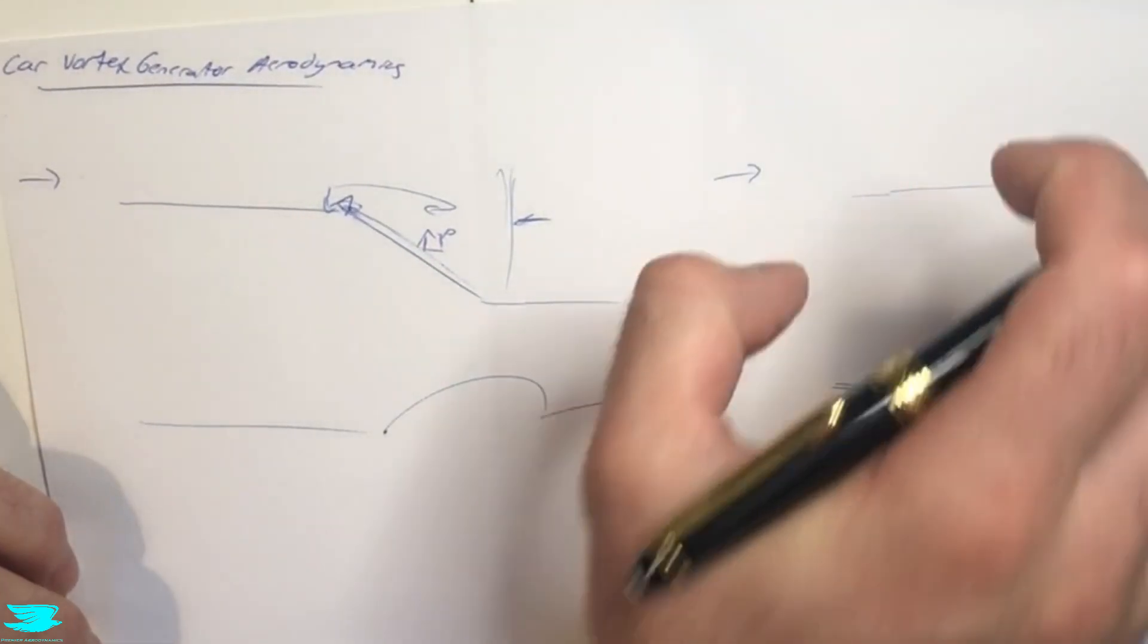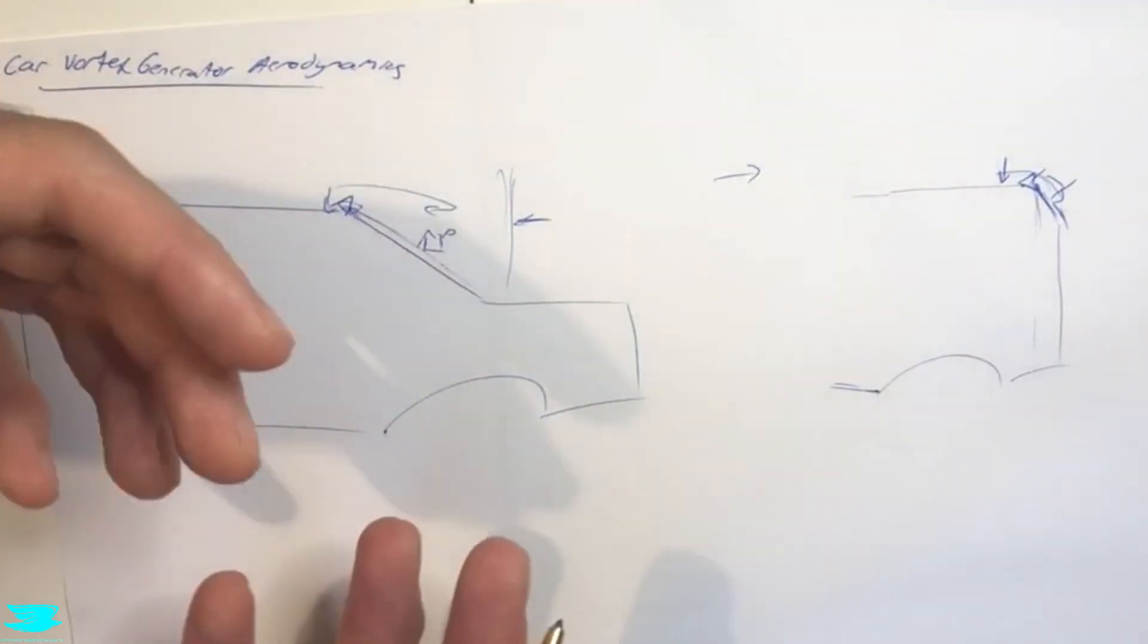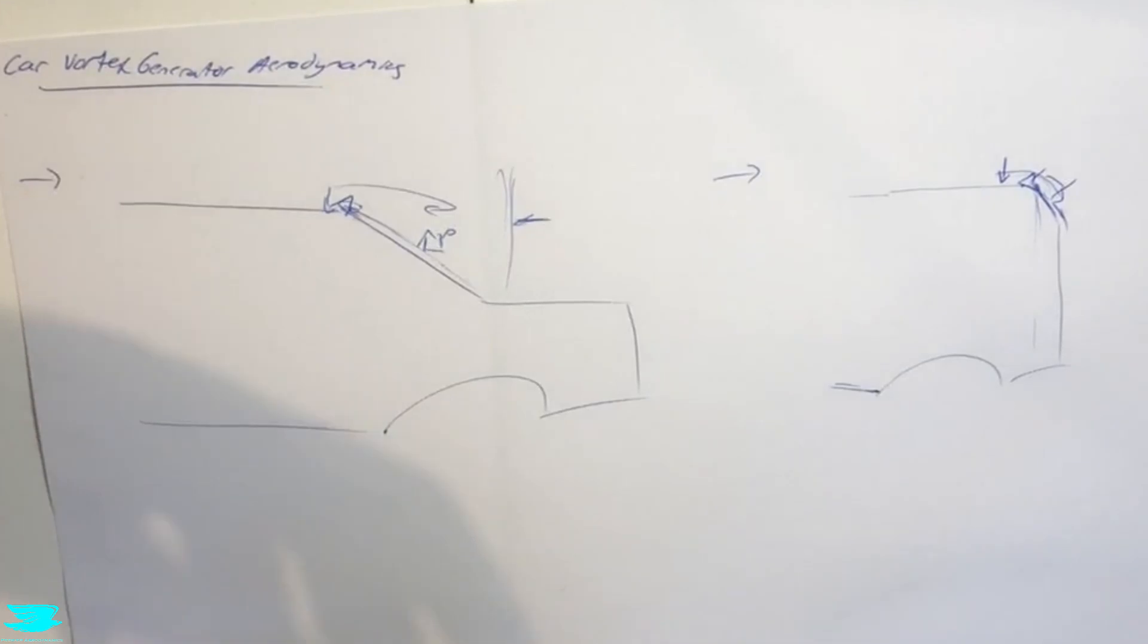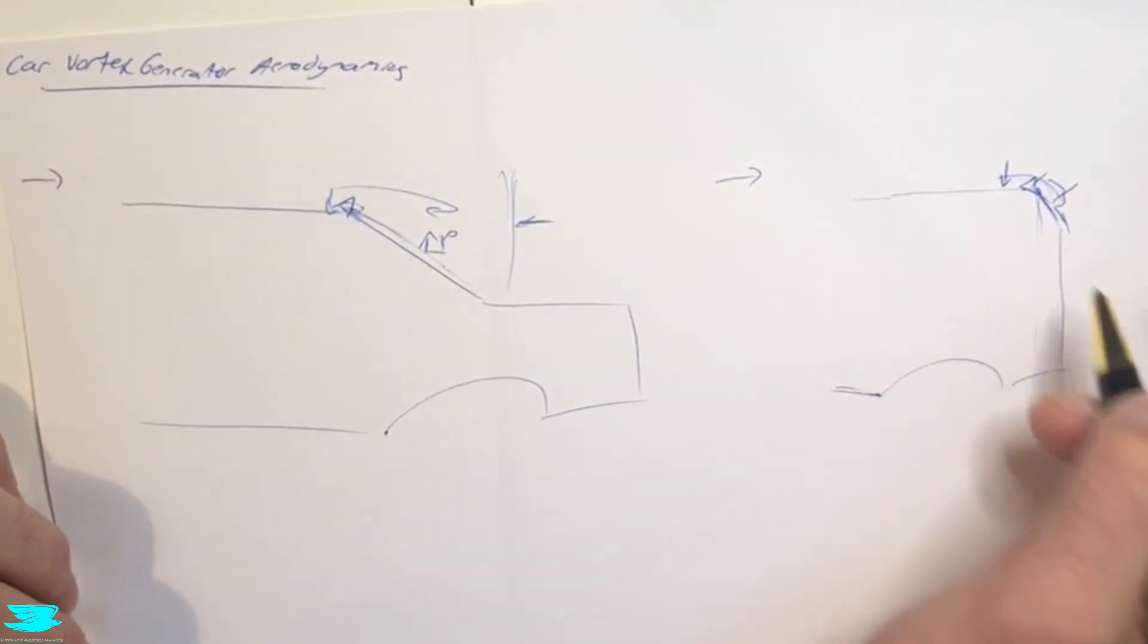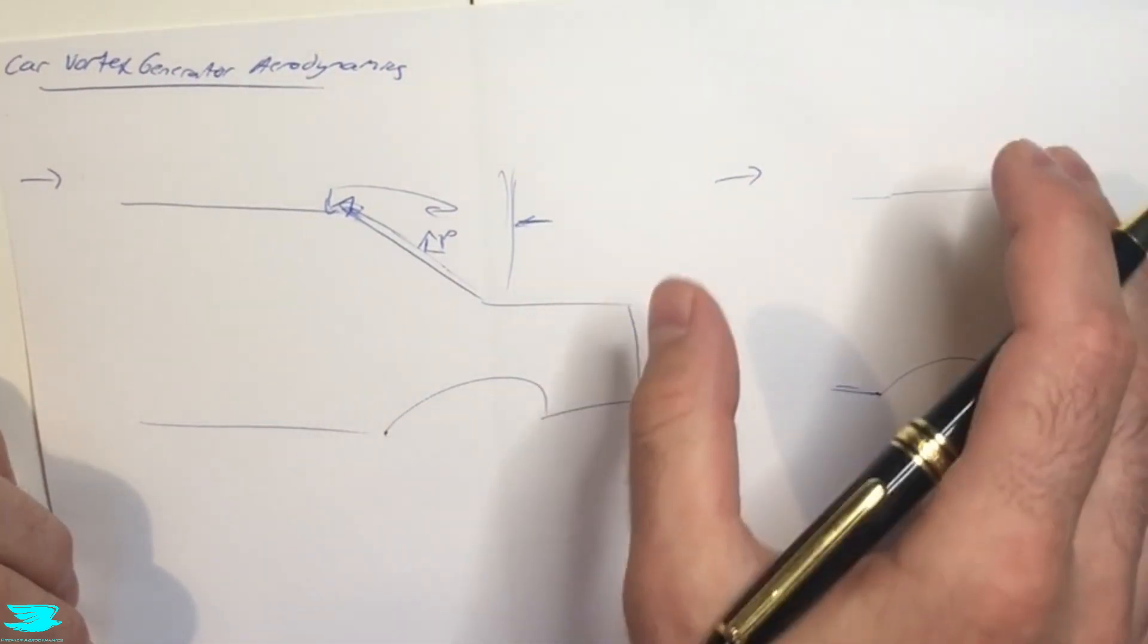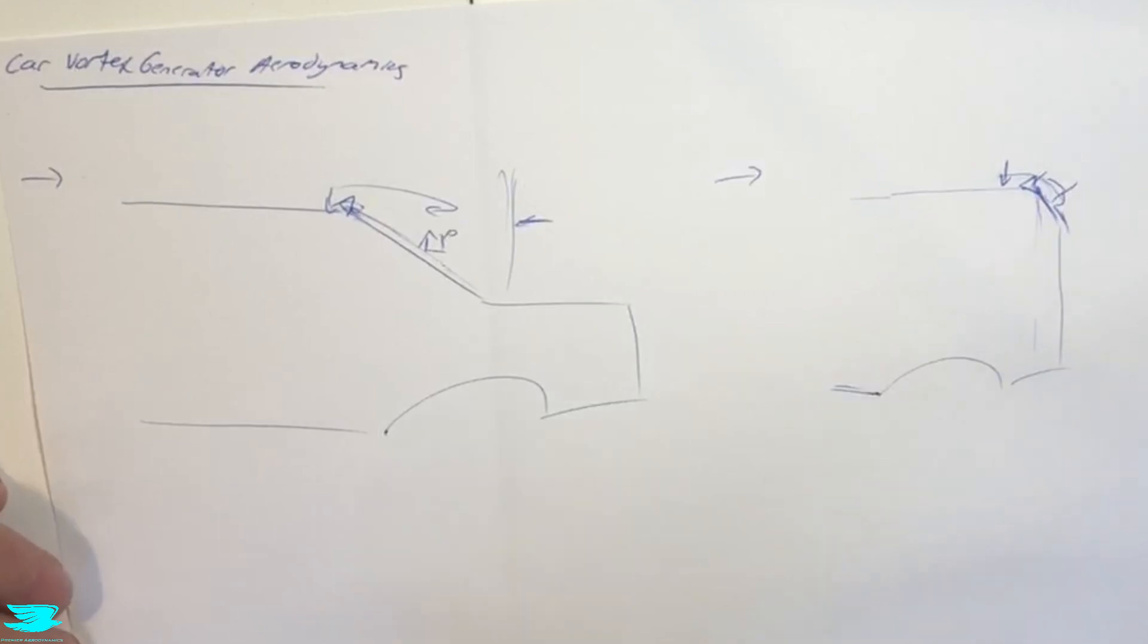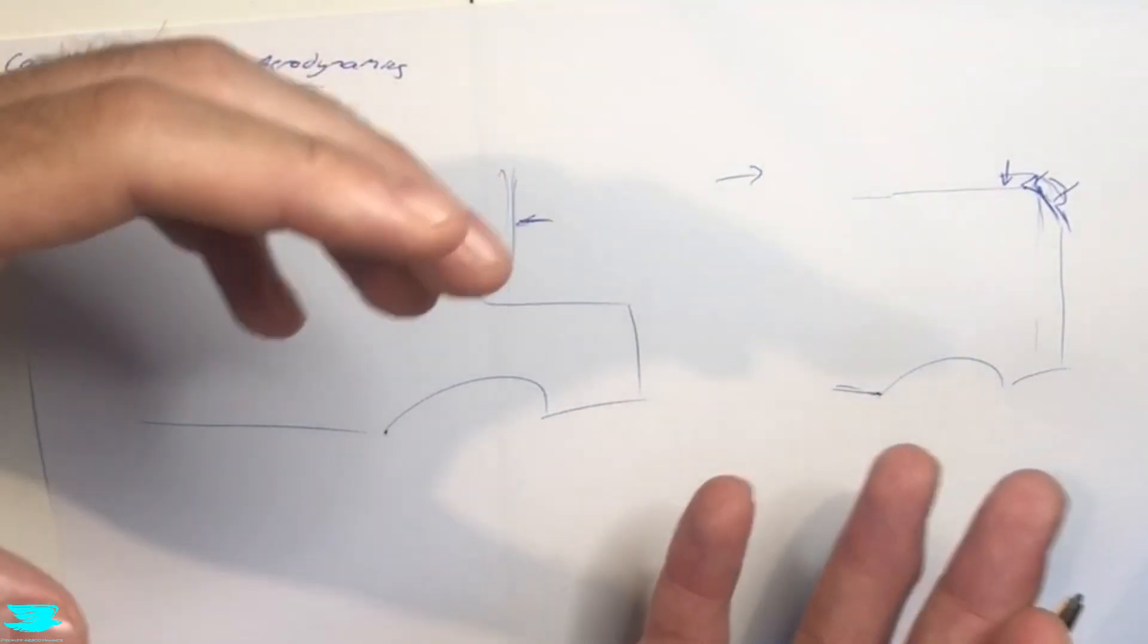But the vortex generators themselves have a drag penalty because they can't be micro vortex generators, they're too big. So they will come with a very strong drag penalty. As such, they often increase the drag more than the reduction you get from the rear window. So you don't really see vortex generators on these very square rears. You get more drag than what you save and the lift isn't really affected very much either. There's not much of a benefit to doing that.